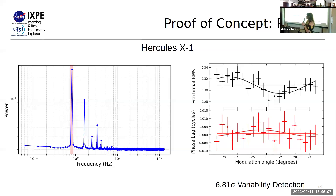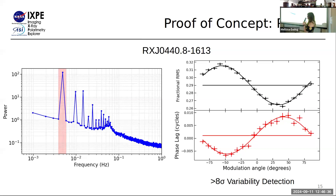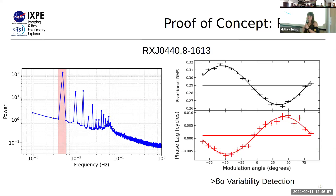Here are the results for Hercules X-1. On the left is the power spectrum showing a very strong peak at the pulse frequency and its harmonics. Focusing our analysis on this pulse frequency, we are able to reconstruct the sinusoidal dependence indicating variability, with a 6.81 sigma significance — confirming yes, there is variability. And we didn't need to look at the pulse phase plots to test that. For RXJ0146, we get a really nice 180-degree modulation because the pulsar is slower, giving more counts per pulse and a stronger signal-to-noise detection.